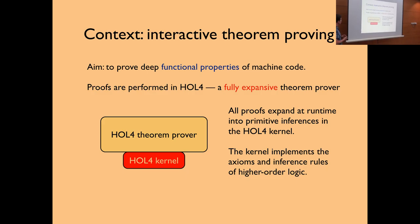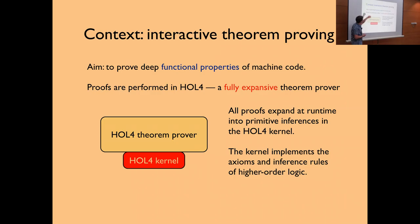I did my PhD in Cambridge and my supervisor was Mike Gordon — he's the originator of the HOL prover. I'm using the HOL prover, and it's a fully expansive theorem prover, meaning it has a small kernel — small as in a few thousand lines. The prover is built on top of this kernel, organized so that every proof you do must pass through the kernel's inferences, and the kernel implements the inference rules of higher-order logic. My task was to improve deep functional properties of machine code.